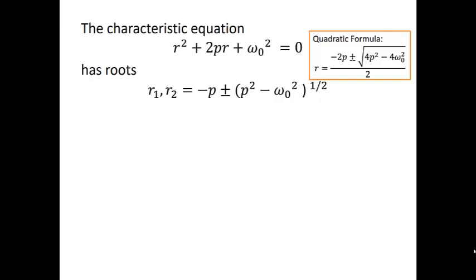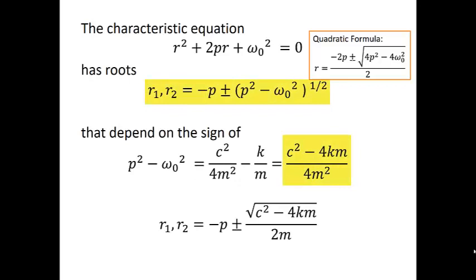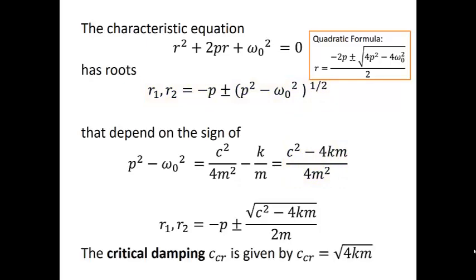Whether or not we have a single real root of multiplicity 2, two distinct real roots, or complex roots depends on the sign of that P squared minus omega naught squared. We use the fact that P squared is C squared over 4M squared and that omega naught squared is K over M and then get a common denominator of 4M squared. Then we see that we can rewrite our roots R1 and R2 as minus P plus or minus the square root of C squared minus 4KM divided by 2M. Everything really comes down to what's under that square root.